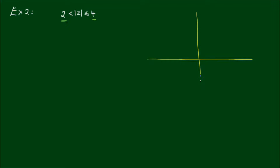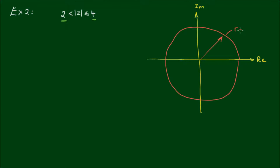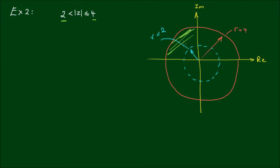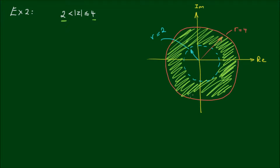On the complex plane, the imaginary axis is vertical and the real axis is horizontal. The outer limit is still a circle of radius 4, and we also have an inner limit of radius 2. The outer circle is solid because it is inclusive, and the inner circle is a dashed line because it is not inclusive. Complex numbers satisfying this condition must be strictly more than 2 units from the origin, so the locus looks like a doughnut centered about the origin, with the hole having a radius of 2.